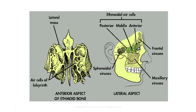The ethmoid sinuses are located within the lateral masses of the labyrinths, and are composed of a varying number of air cells, which are divided into three main groups: anterior, which have 2–8 cells; middle, which can also have 2–8 cells; and posterior, which can possess 2–6 individual cells.